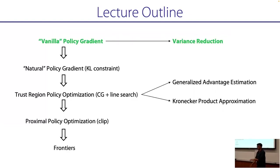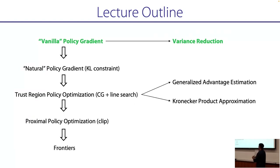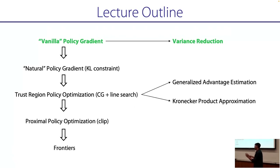To summarize the first part: we talked about vanilla policy gradient, derived it from gradient descent using the REINFORCE trick. It's slightly different from supervised learning. We said it has high variance, and we talked about two variance reduction methods: ignoring past rewards using causality, and subtracting a baseline.